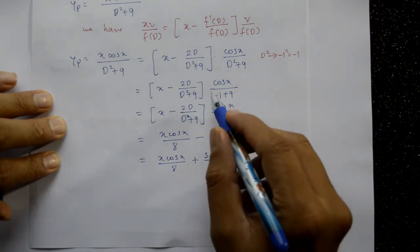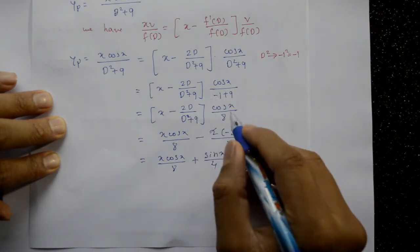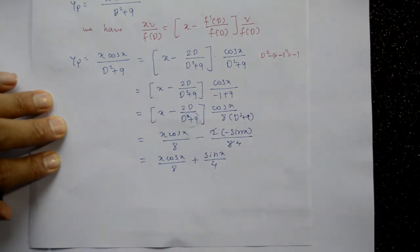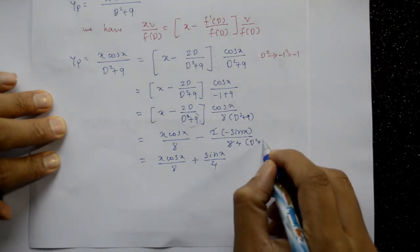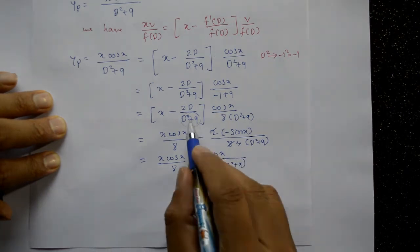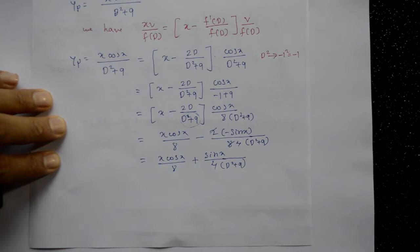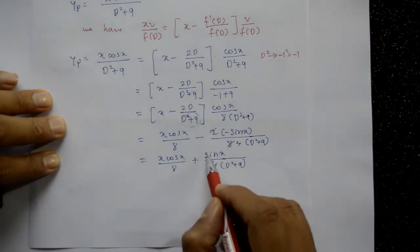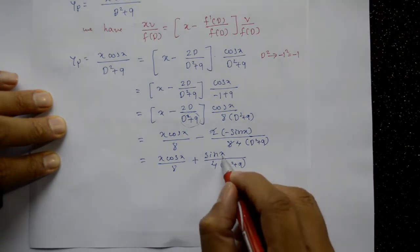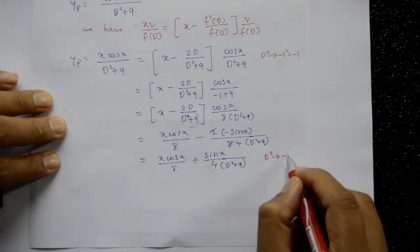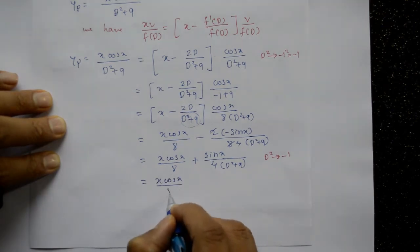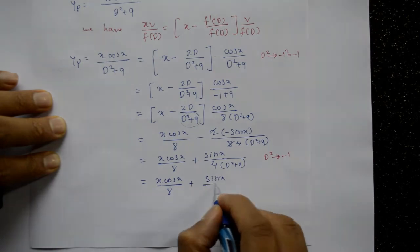We still have the remaining part: (1/4)·sin(x)/(D²+9). Using Type 2 again with D²=−1: sin(x)/(−1+9) = sin(x)/8. So (1/4)·(sin(x)/8) = sin(x)/32.